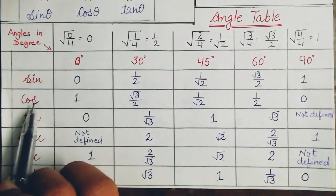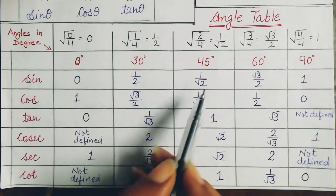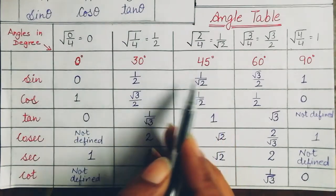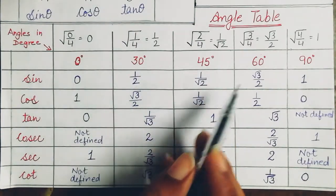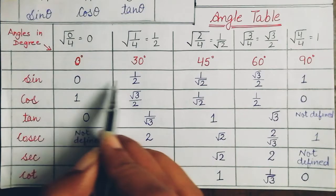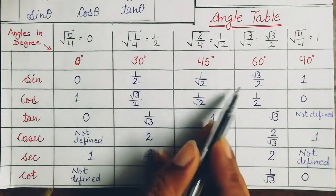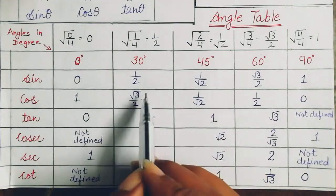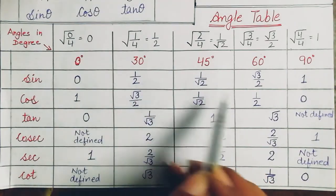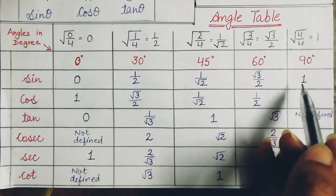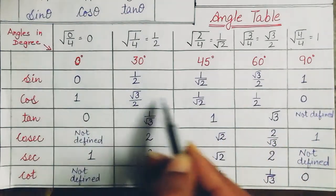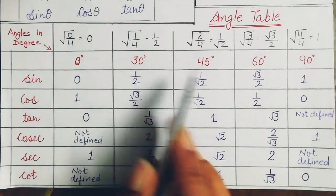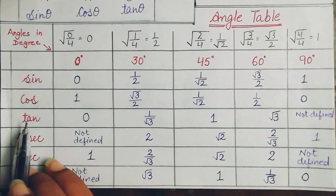To find cosine values, just write the sine values in reverse order. So: cos 0° = 1, cos 30° = √3/2, cos 45° = 1/√2, cos 60° = 1/2, cos 90° = 0. Start from the back side and place them as the cosine values.